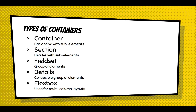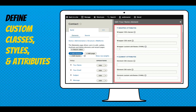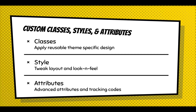Every single element supports custom CSS classes, styles, and attributes. Classes are reusable classes from your theme that you can plug into anything on a form — make this a big button, make this a big text field. You can tweak minor pieces of the layout and look and feel on an individual form, like adding a little extra margin to an element. Attributes allow you to add advanced HTML attributes that might be missing from the UI, or even tracking codes.